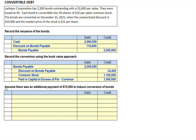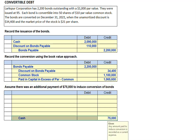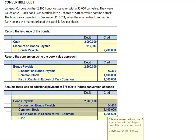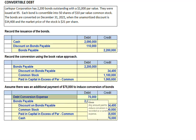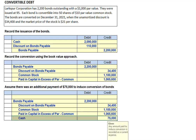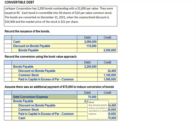Now, let's assume there was an additional $75,000 paid to induce the conversion of the bonds. The first thing to remember is that the normal journal entry is exactly the same, except we add a credit to cash and a debt conversion expense. So, comparing the entry for the actual retirement of the bonds — same as the prior one — we also have the additional credit to cash and our $75,000 in debt conversion expense.